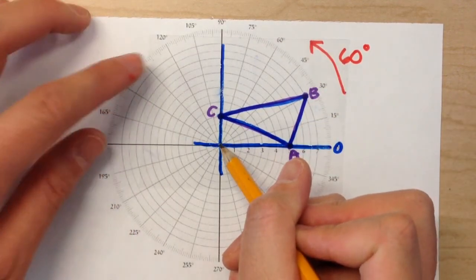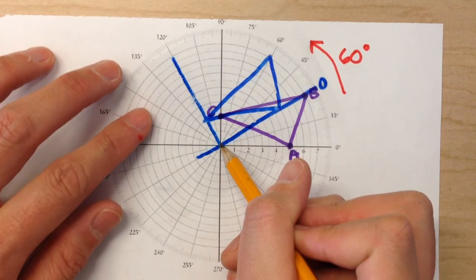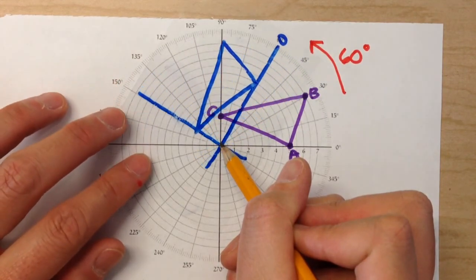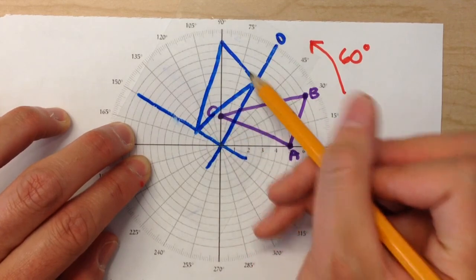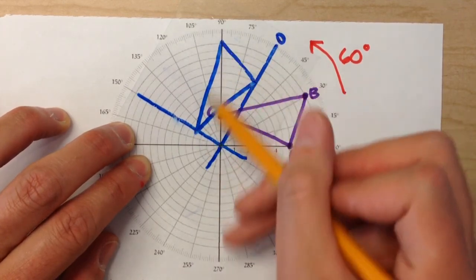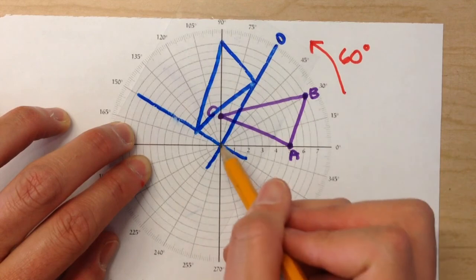So I'm going to put my pencil here, rotate it around, there, right here. So this is where my triangle should end up if I rotate it 60 degrees around the origin.